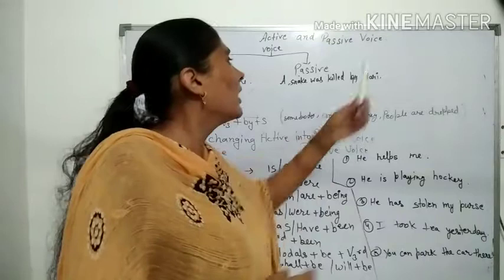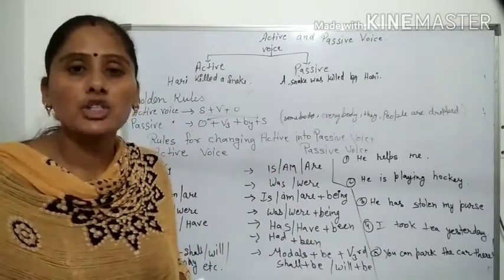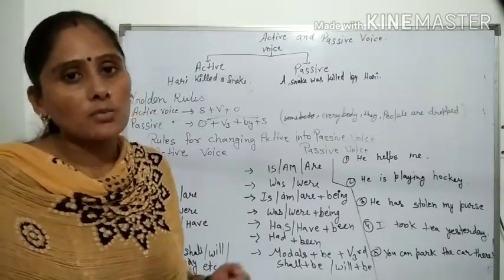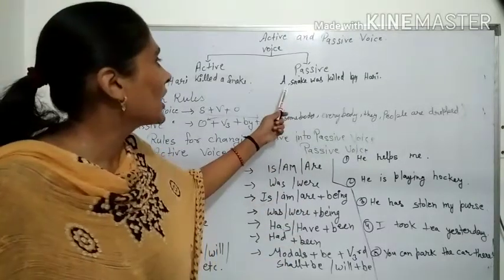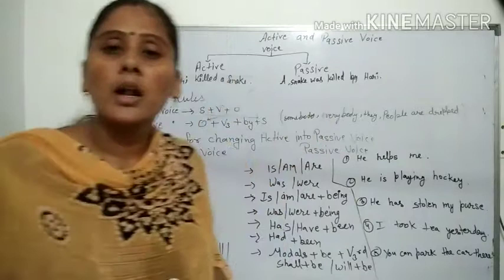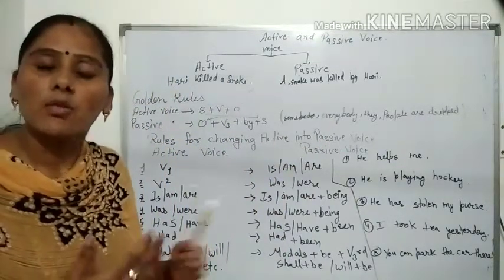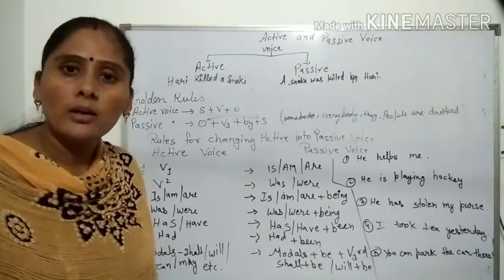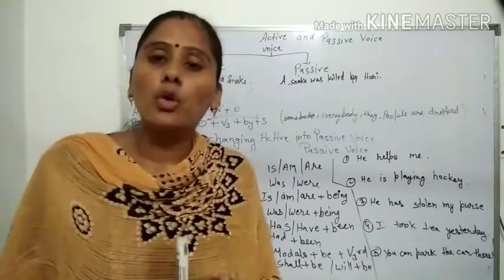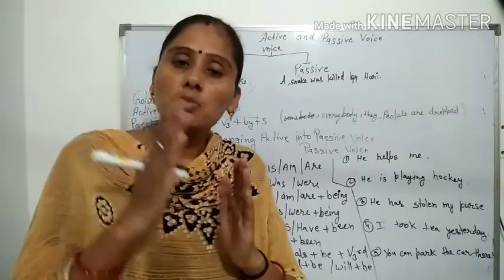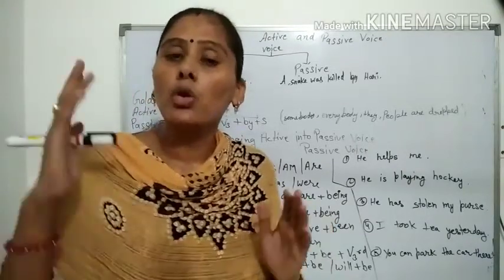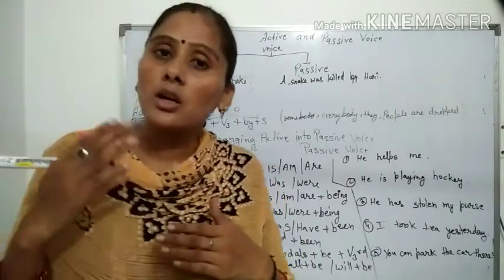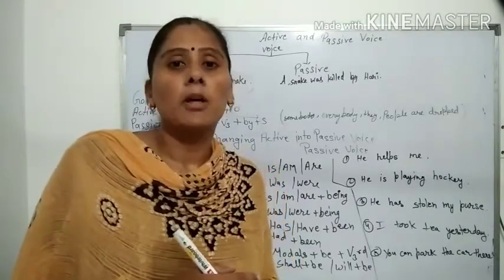उदाहरण के लिए — Hari killed a snake। यानि एक साँप मारा गया हरी के द्वारा। यहाँ पर subject active न होकर, काम के through बताया गया है। जब subject के द्वारा कोई काम किया जाए, क्रिया की जाए, तो वो active voice है। जब काम के through यानि subject को या subject के लिए कुछ किया जाता है, तो वो होता है passive voice।